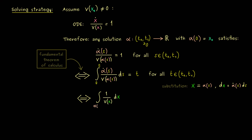After substitution, we have the integral of 1 divided by v of x, integrated from alpha(0) to alpha(t). Don't forget the boundaries change too. Since alpha(0) equals our initial value x₀, we immediately substitute that in. So we have the integral from x₀ to alpha(t) of 1 over v of x dx, and this equals t for all t.